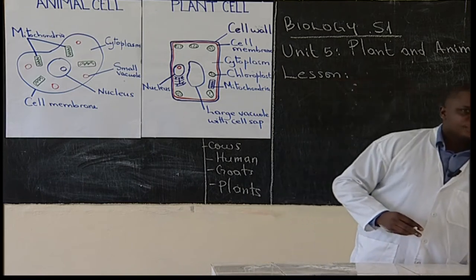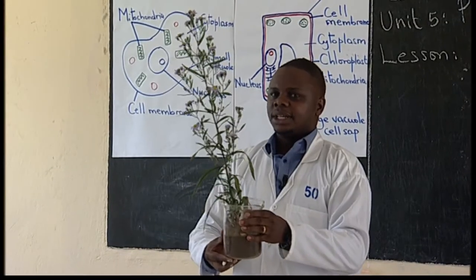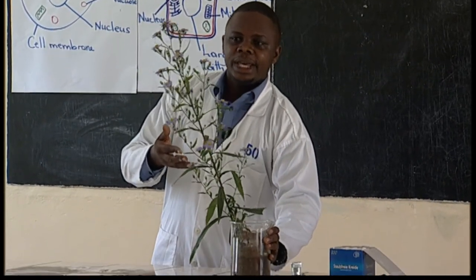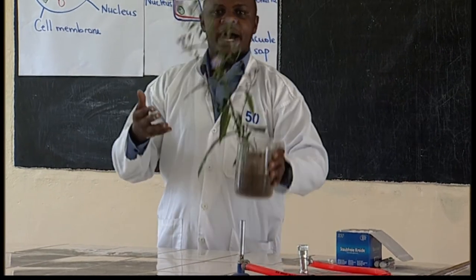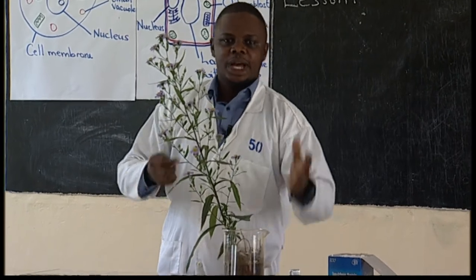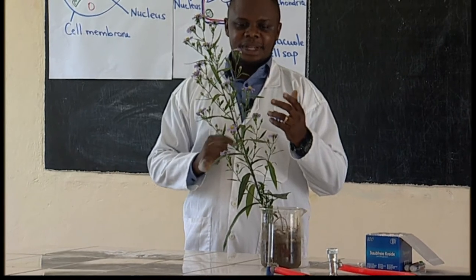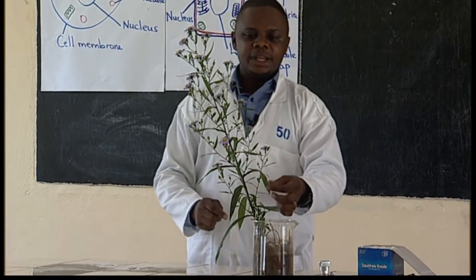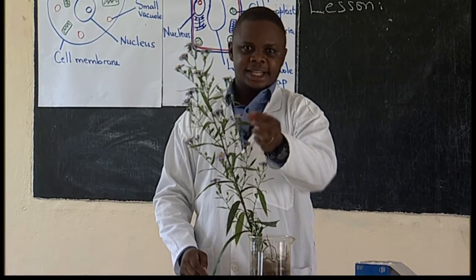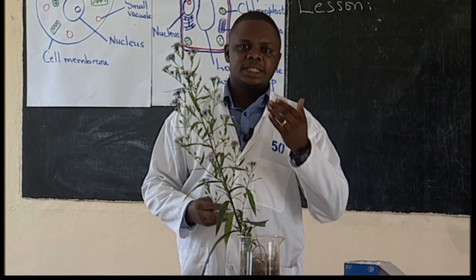Let us take an example of this plant. Here I have a plant in front of me which has different parts. Can we mention those parts that make this plant? We have roots, we have stem, we have leaves, and we also have flowers. So this plant is living and it has different parts.